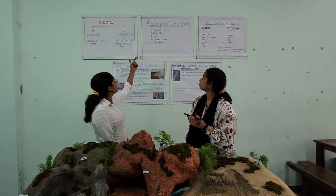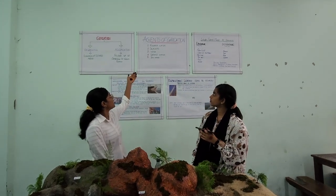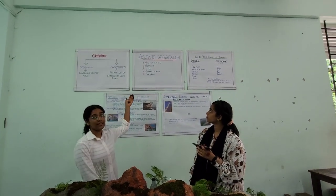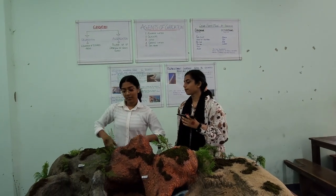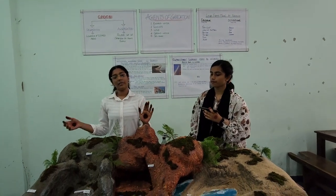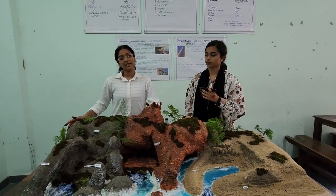There are various agents of gradation, which are: running water, glaciers, wind, groundwater, and seas. Seas are the most important agent of degradation. Now we can look into the major erosional features made by seas.